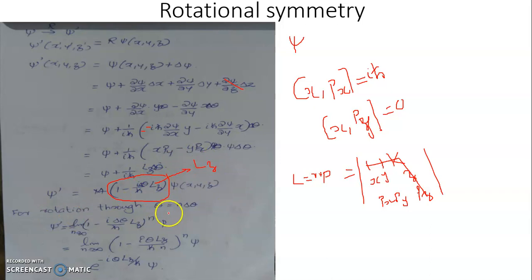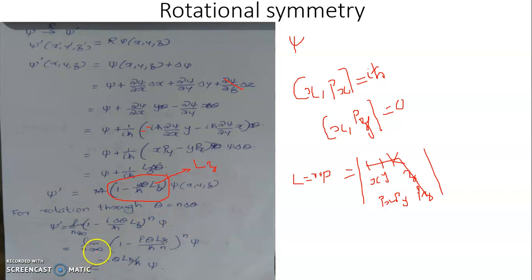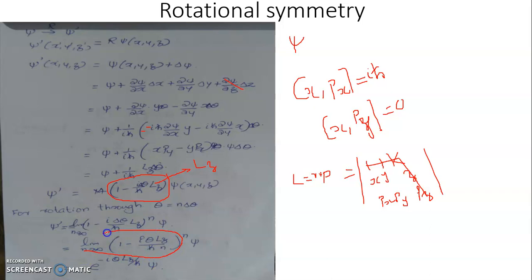For rotation through a finite angle theta equal to n times delta theta, psi prime equals the limit as n tends to infinity of (1 minus i·δθ/ℏ·Lz)^n times psi. Taking the limit as n tends to infinity and replacing delta theta by theta/n, we get (1 minus i·θ·Lz/ℏ·n)^n times psi.